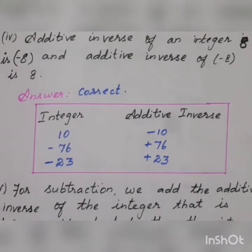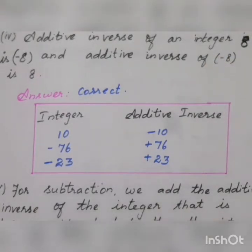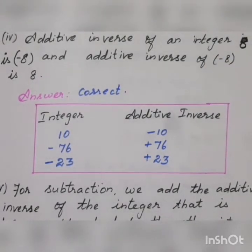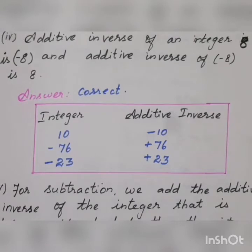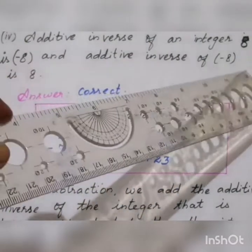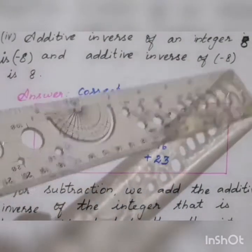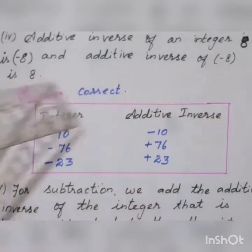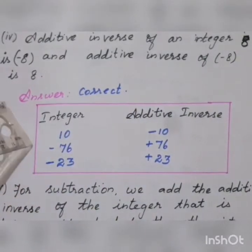I hope all of you understand what is meant by additive inverse. Let me see the fourth statement. Additive inverse of an integer 8 is minus 8, and the additive inverse of minus 8 is plus 8. Is it correct? Yes, it is correct. The additive inverse of minus 8 is plus 8, so this statement is correct.